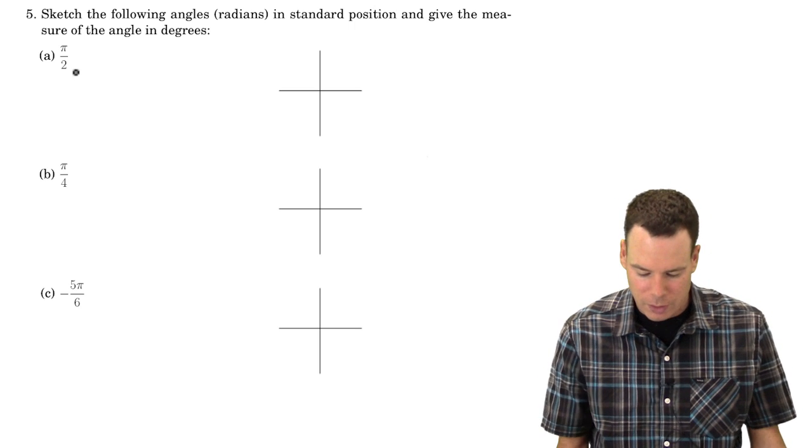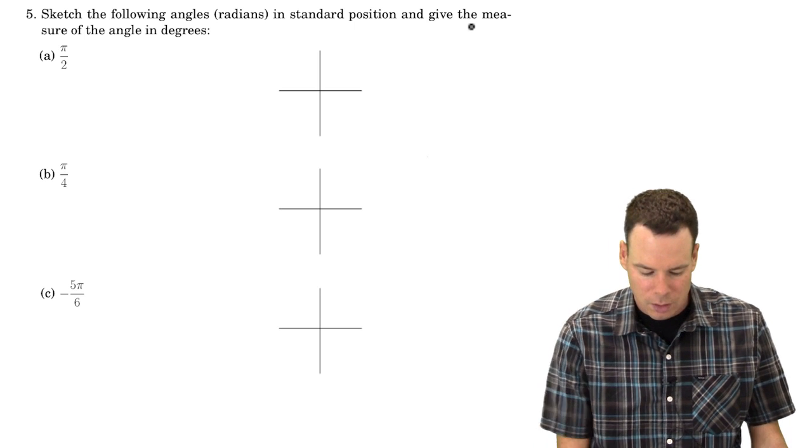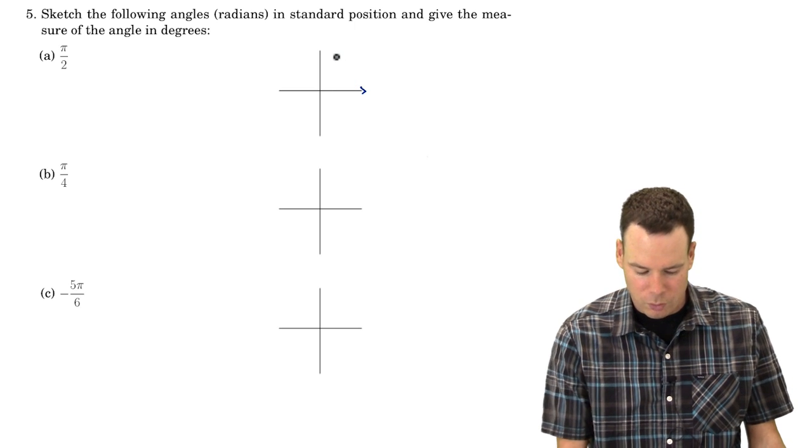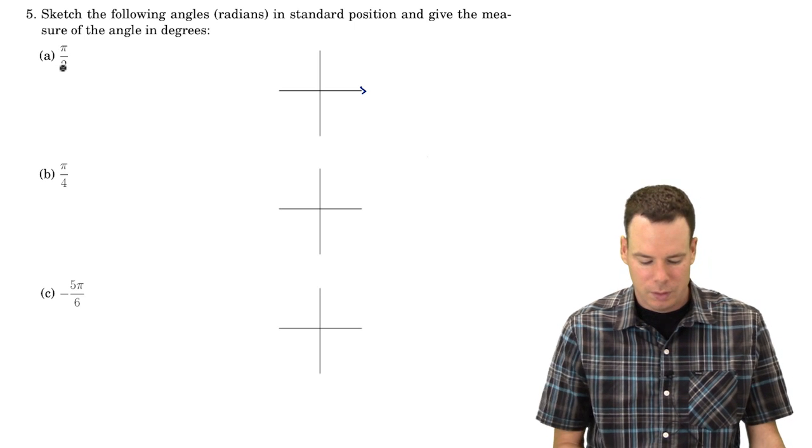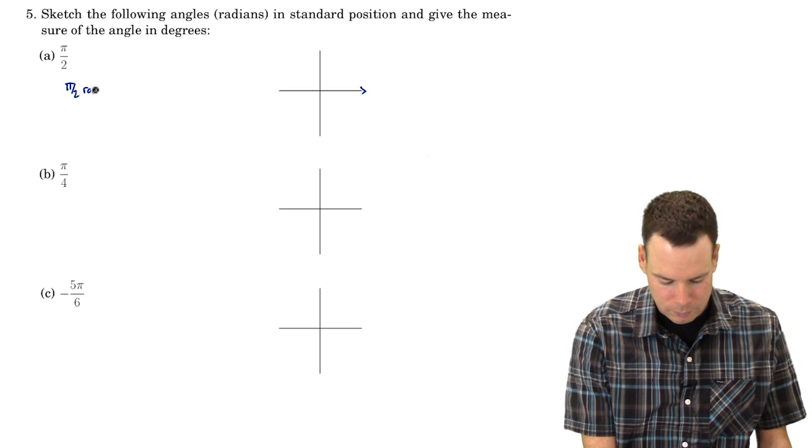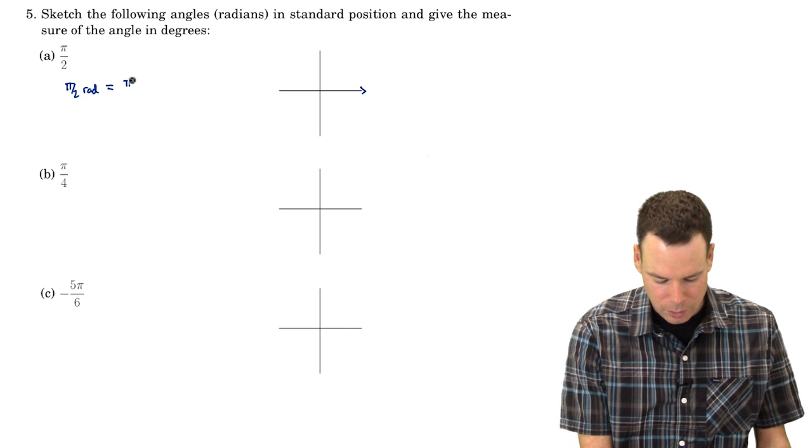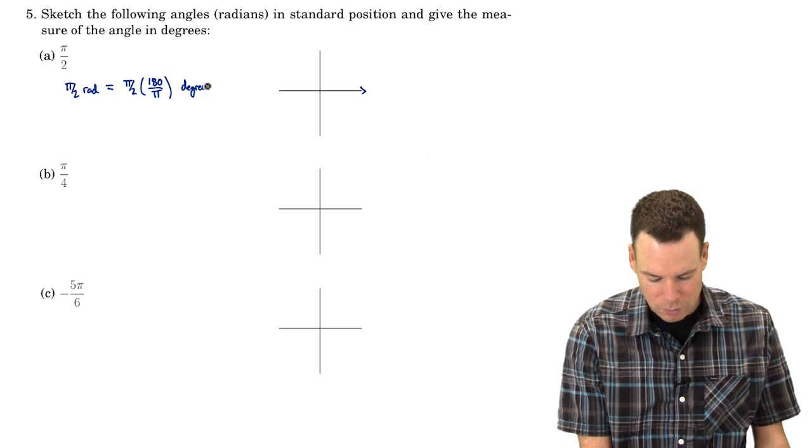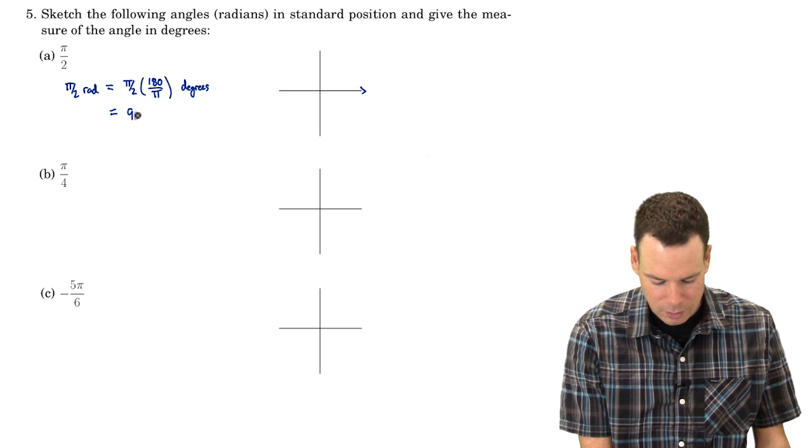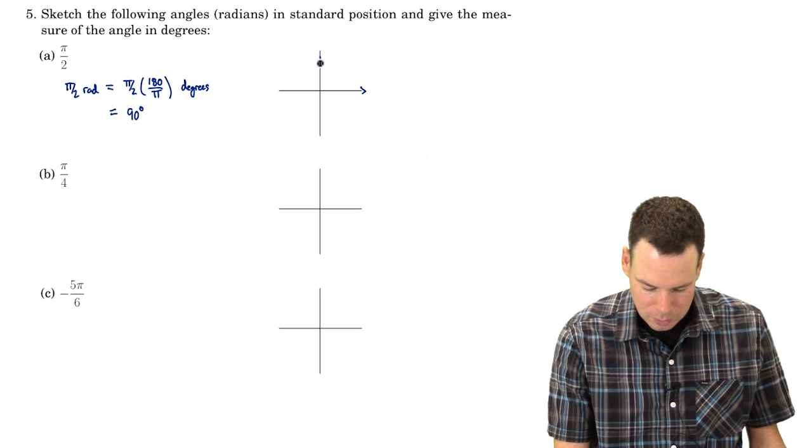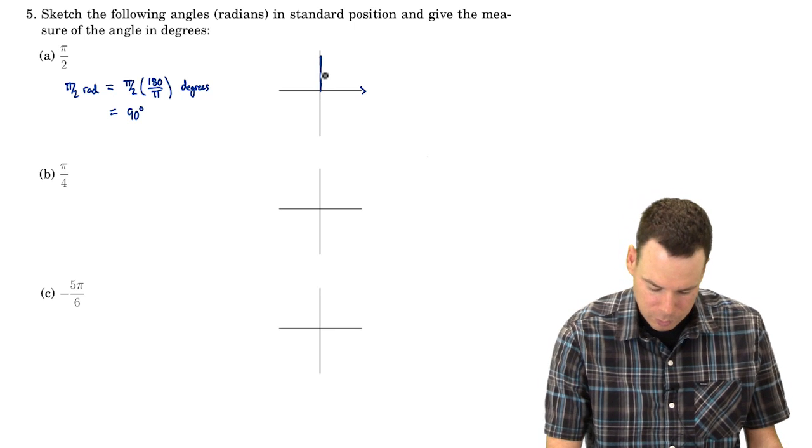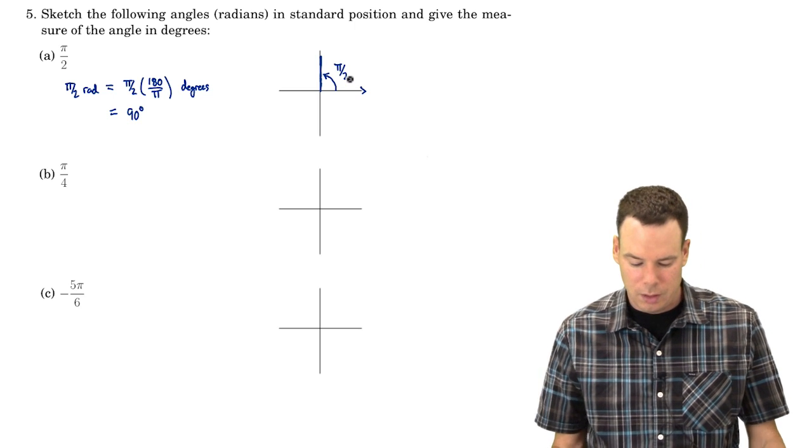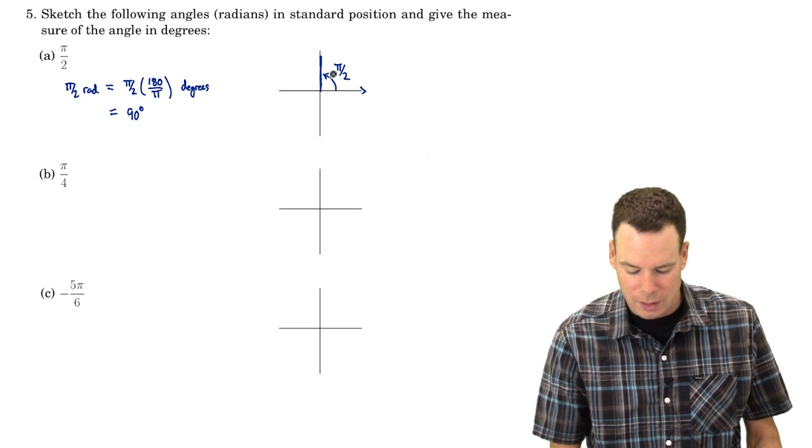So sketch the following angles, they're all given in radians, in standard position and give the measure of the angle in degrees. So what's π/2? Standard position means we measure from this positive x-axis in the counter-clockwise direction. So π/2 radians is equal to π/2 times 180 over π degrees per radian, our conversion factor, and so we see that it's 90 degrees. So π/2 radians is the same as 90 degrees. So there is our line segment and there is our angle drawn in standard position.